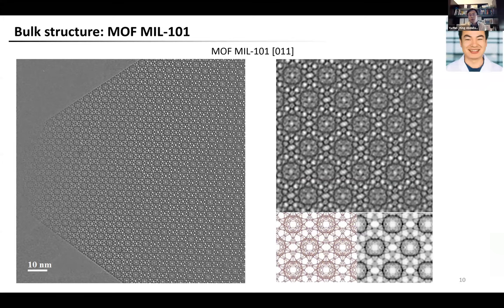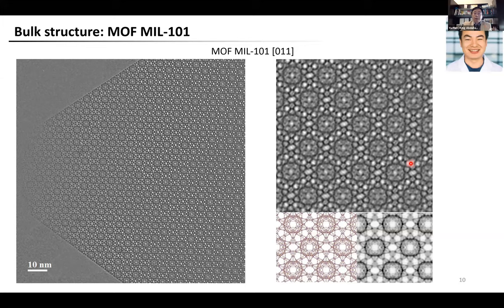We also studied the crystal surface of MIL-101, following the same logic — starting with the bulk structure to confirm safe imaging conditions. MIL-101 has a very large unit cell and very complicated structure. Even so, our image shows a perfect match with the projected structure model. The major structural features, including mesoporous cages, surrounding smaller channels, and chromium clusters, can all be identified in the image, confirming that imaging conditions are safe.